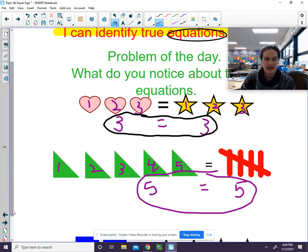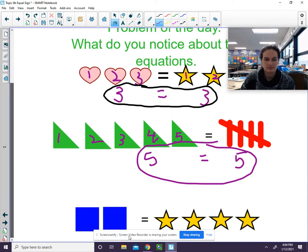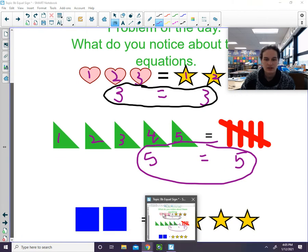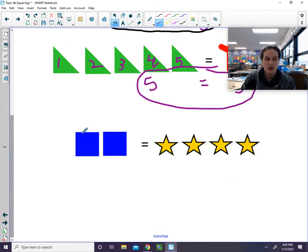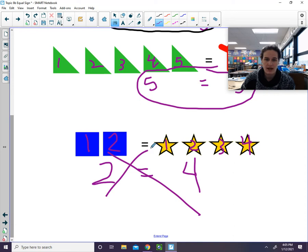Finally, let's take a look at this last one. We see that we have one, two squares, and we have one, two, three, four stars. So is two equal to four? Two and four are not the same. So we would put an X through that one.